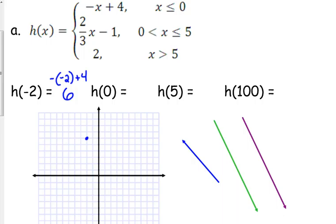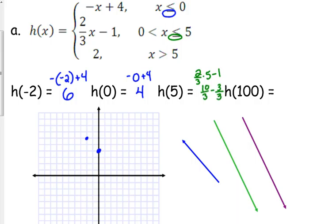H of 0: 0 is still the first piece because it's equal to 0 for the first one. We've got negative 0 plus 4, which is just 4. So our point is (0, 4). H of 5: 5 is in the middle piece — we've got 2 thirds times 5 minus 1. That's 10 thirds minus 1, and 1 expressed as thirds is 3 thirds, so that's 7 thirds, which equals 2 and a third. There's that point.